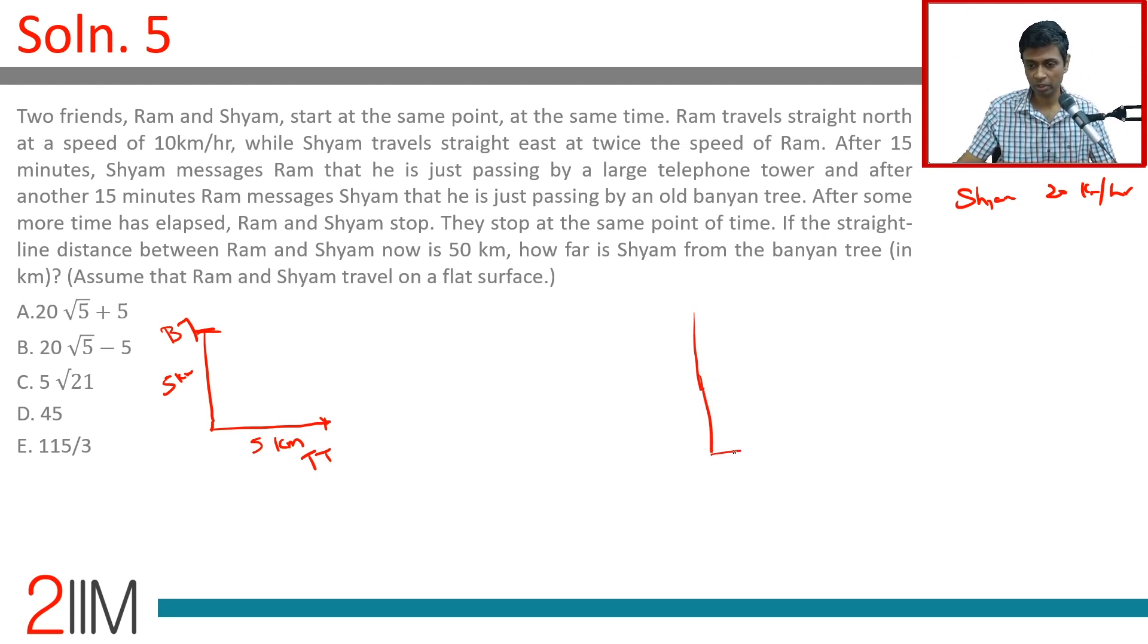At any point of time, if Ram has traveled X, Shyam has traveled 2X. The straight line distance is 50, which equals √(X² + (2X)²).